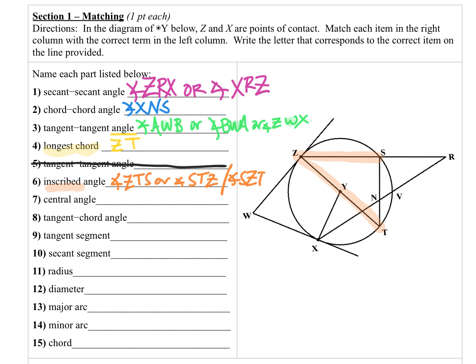A central angle is an angle where the vertex is at the center. There are two central angles here. The first is XYT — so angle XYT or TYX. The other central angle involves Z over there: ZYX. Y is always in the center. So as long as Y is your vertex, you have a central angle, because Y is the center of the circle.